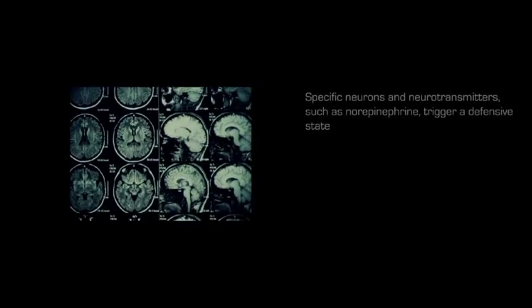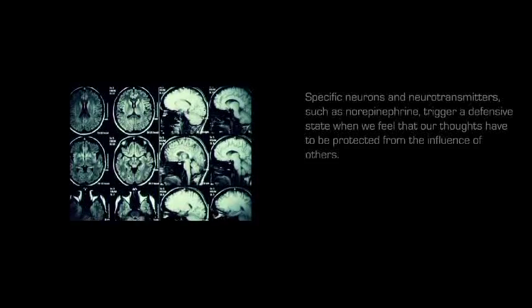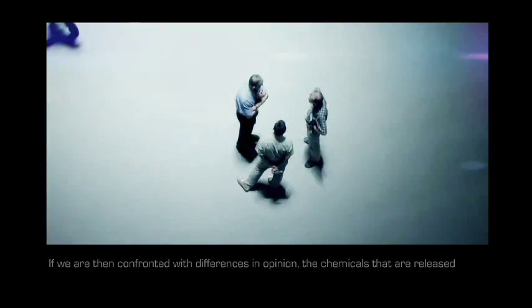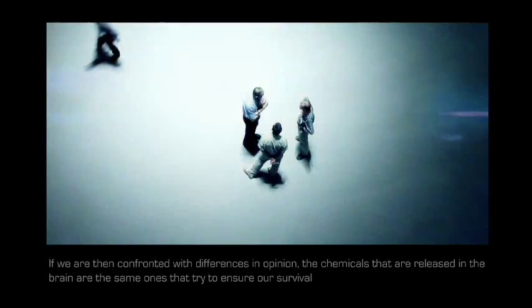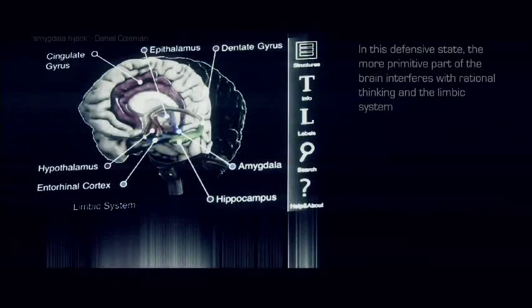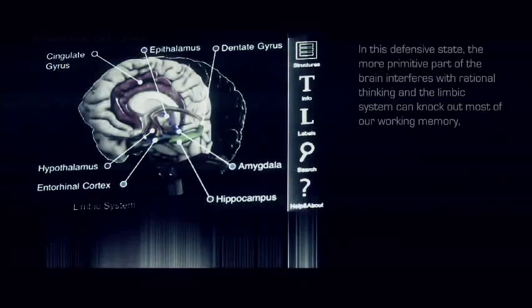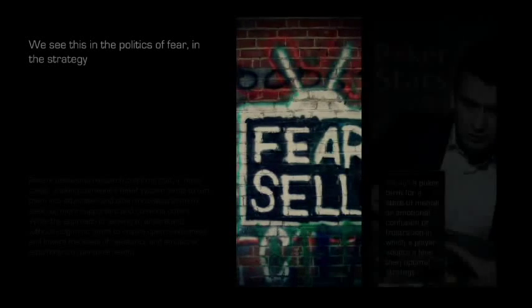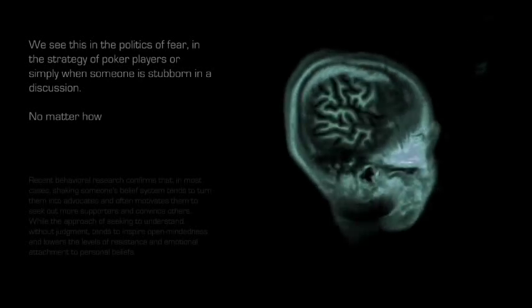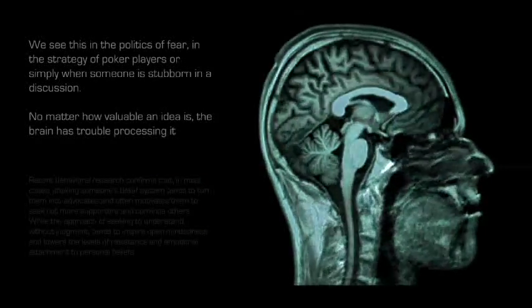Specific neurons and neurotransmitters, such as norepinephrine, trigger a defensive state when we feel that our thoughts have to be protected from the influence of others. If we are then confronted with differences in opinion, the chemicals that are released in the brain are the same ones that try to ensure our survival in dangerous situations. In this defensive state, the more primitive part of the brain interferes with rational thinking, and the limbic system can knock out most of our working memory, physically causing narrow-mindedness. We see this in the politics of fear, in the strategy of poker players, or simply when someone is stubborn in a discussion. No matter how valuable an idea is, the brain has trouble processing it when it is in such a state.